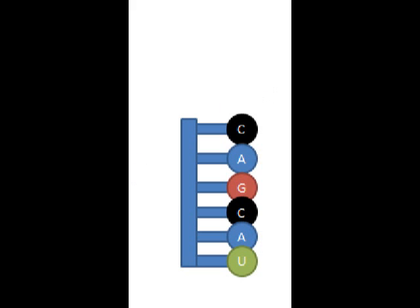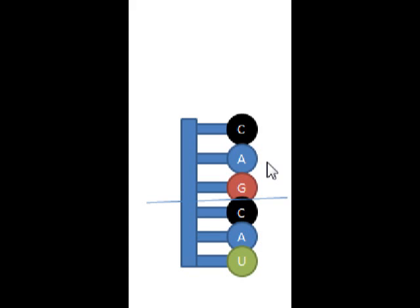Codons are sets of three bases. So you would separate these into sets of three — so there would be a line right here. A set of three is a codon, so we have two codons here. And what they do is they code for amino acids — each set of three goes with a specific amino acid. The reason why this is important is because amino acids make proteins. The whole point of DNA synthesis is we have to make proteins, and that's why it's important to know what amino acids are in a protein. Each set of three codes for a protein.